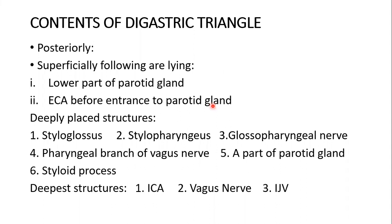What is present posteriorly in the digastric triangle? Superficially are the lower part of the parotid gland and the external carotid artery before its entrance to the parotid gland. Deeply traced structures are the styloglossus, stylopharyngeus, glossopharyngeal nerve, pharyngeal branch of the vagus nerve, part of the parotid gland, and styloid process. The deepest structures are the internal carotid artery, vagus nerve, and internal jugular vein — all enveloped by the carotid sheath, present throughout the length of the neck.